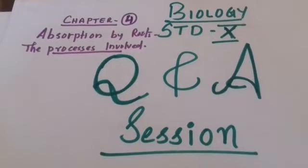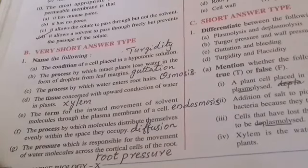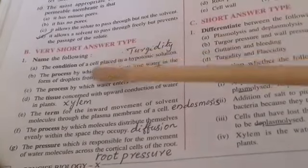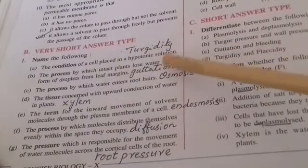Good morning students. Here we will be discussing some of the question answers of Chapter 4: Absorption by Roots — the processes involved, of biology for standard 10 students. We'll start with 'Name the following.'